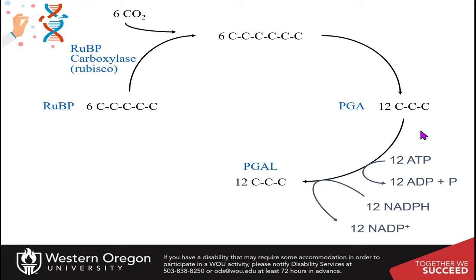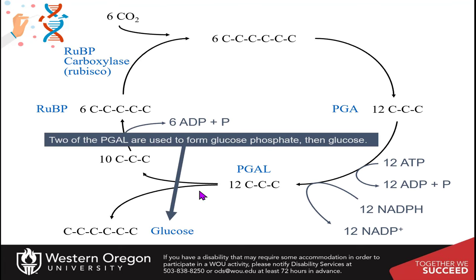This is very energy intensive to make the sugar molecules. Once you make the glyceraldehyde 3-phosphate, two of these are used to form the glucose phosphate, and then the phosphate can be cleaved off to just have glucose.